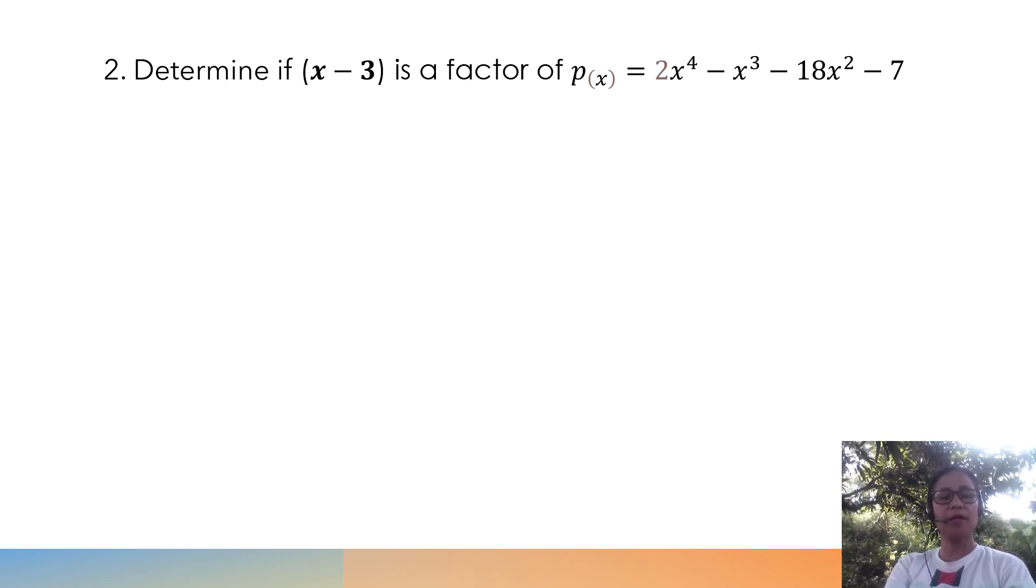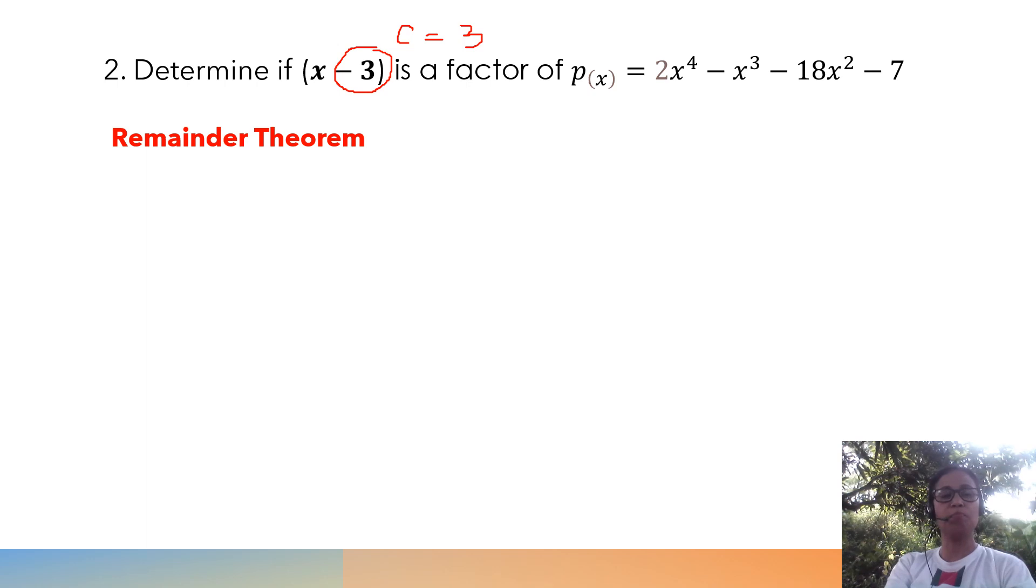To verify this, we are going to apply the Remainder Theorem. Since our divisor is x minus 3, therefore, our c will be equal to 3. To obtain the remainder, we are going to solve P(3). It only means that we are going to substitute the value 3 to all the x variables.